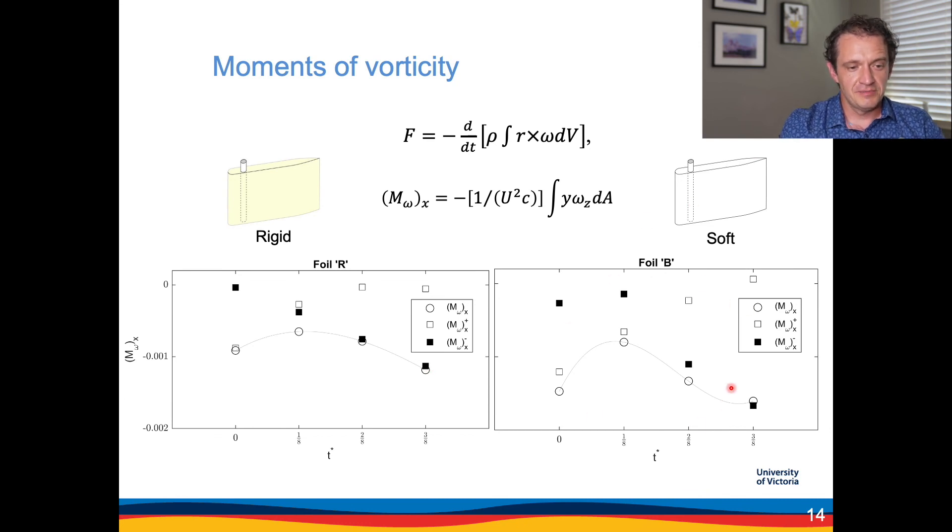The right hand side plot shows the soft foil, the one that deflects the most. As I mentioned when I was looking at the vorticity plots, the shedding of the negative vorticity is delayed in the oscillation cycle, and so the contribution of the black symbols to the calculated moment is delayed as well, so we have a different distribution of instantaneous forces.